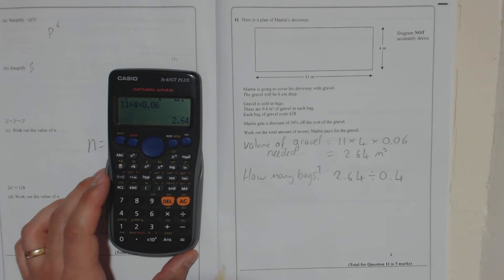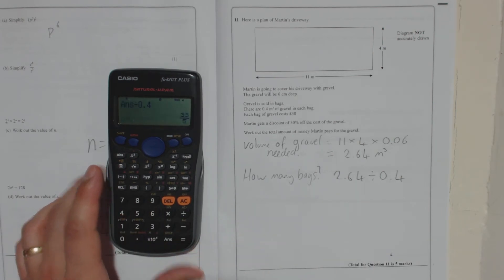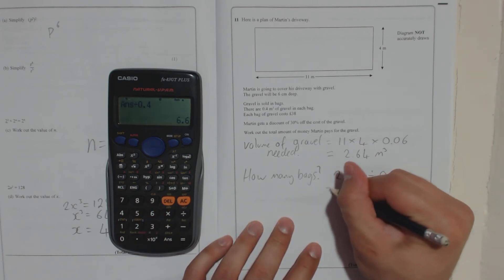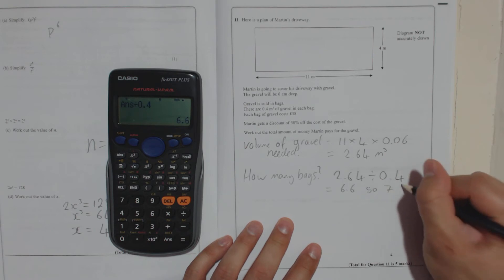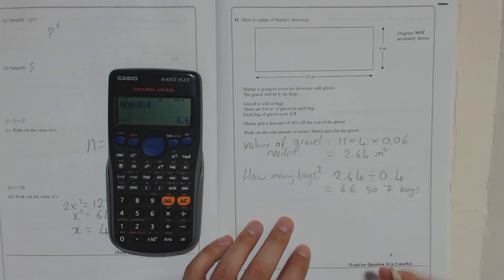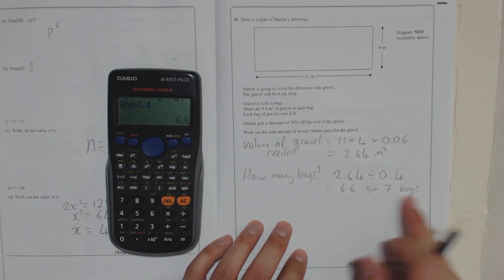So 2.64 is already in my calculator. So divide by 0.4 and that gives me 33 over 5 which is 6.6. So 7 bags, because obviously you can't buy 0.6 of a bag. So he needs to buy 7 bags.